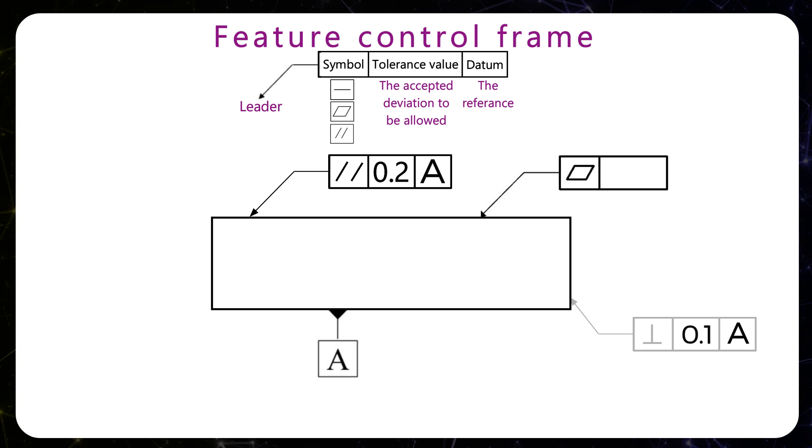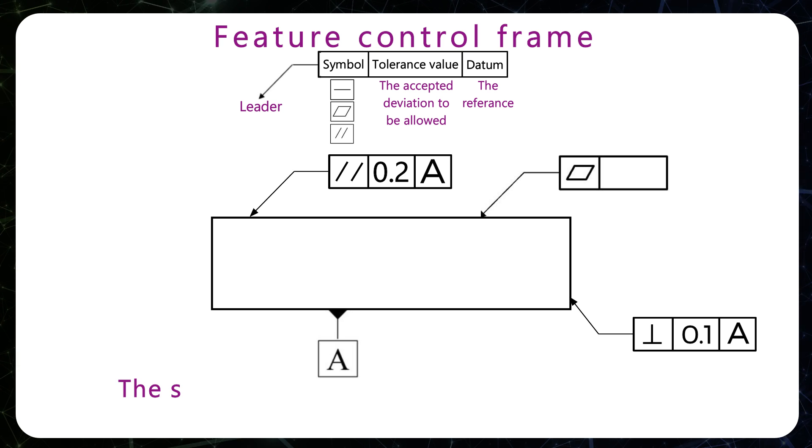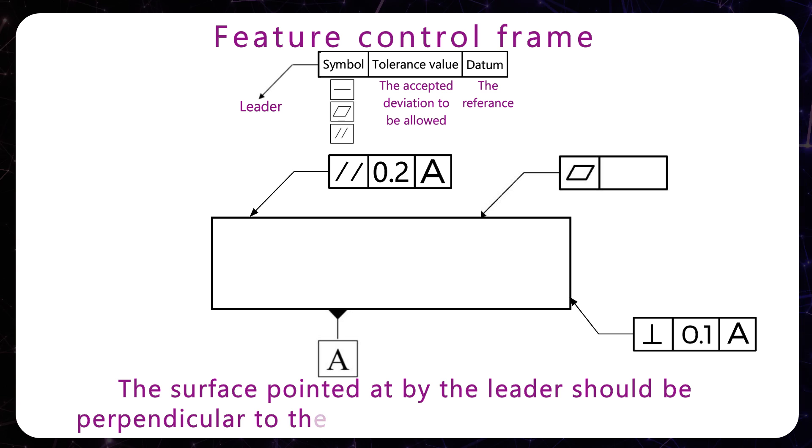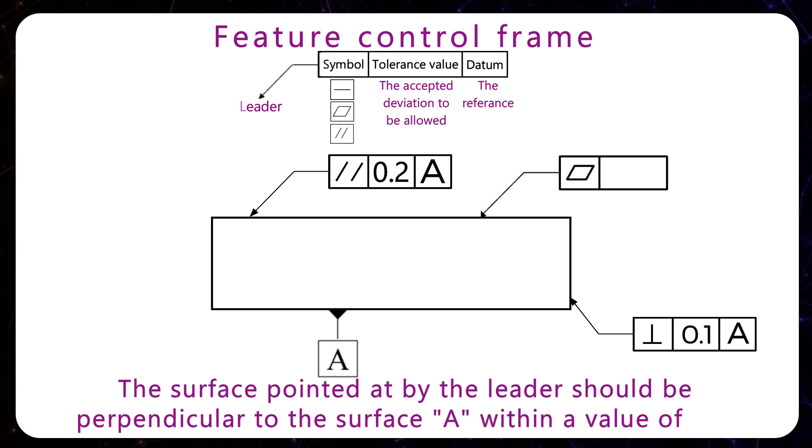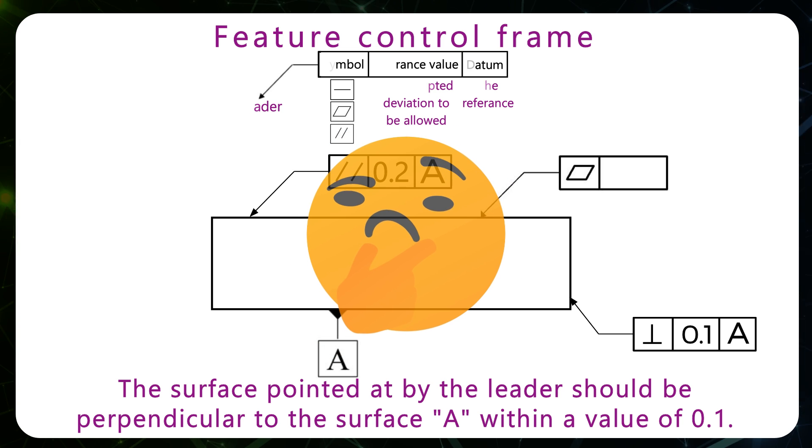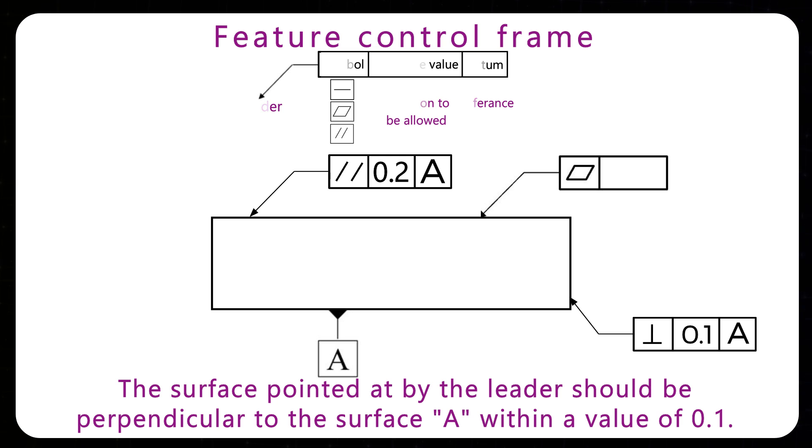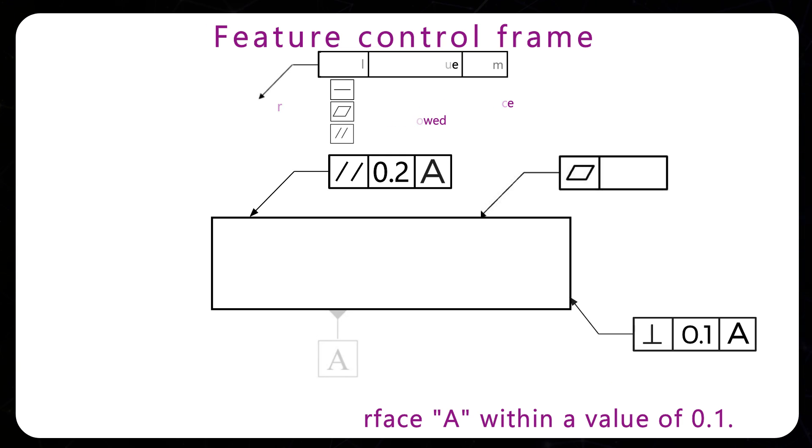So, a specification like this would read out, the surface which is pointed at by the leader should be perpendicular to surface A within a value of 0.1. But what does perpendicular with a value of 0.1 mean? How do we evaluate that? To answer this, let's look at the different types of specifications that we have.